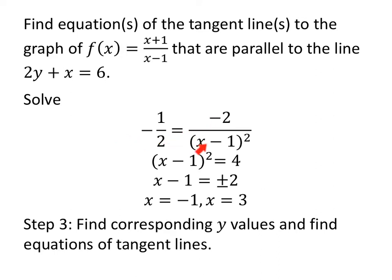Setting negative 2 over (x minus 1) squared equal to negative one half, cross-multiplying gives x minus 1 all squared equals 4. Using the square root property — taking the square root of both sides, remembering to include plus or minus — square root of 4 is plus or minus 2. So if x minus 1 equals 2, then x equals 3. If x minus 1 equals negative 2, then x equals negative 1.